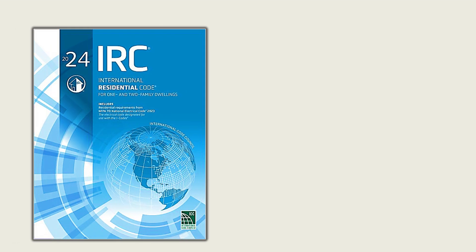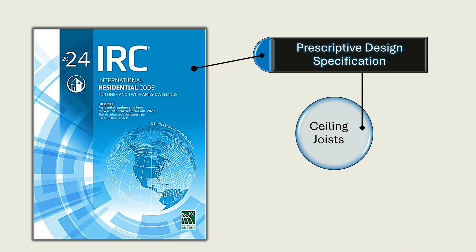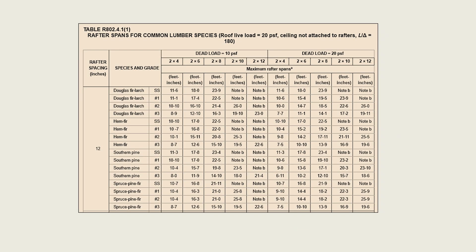The residential code provides prescriptive design specifications for ceiling joists and rafters of certain species and grades. The rafter design tables provide design requirements for four species of softwood lumber: Douglas fir larch, hem fir, southern pine, and spruce pine fir. For each species, the code provides design provisions for four grades including select structural, grade number 1, grade number 2, and grade number 3.